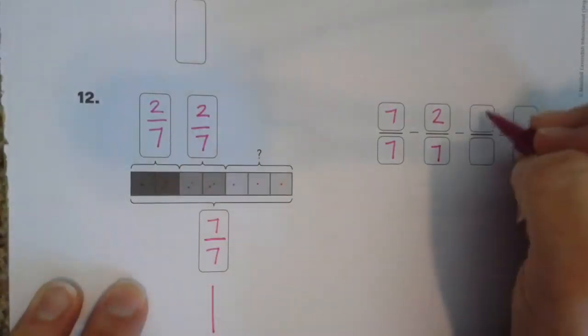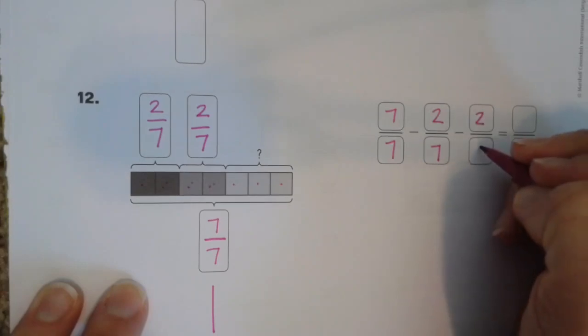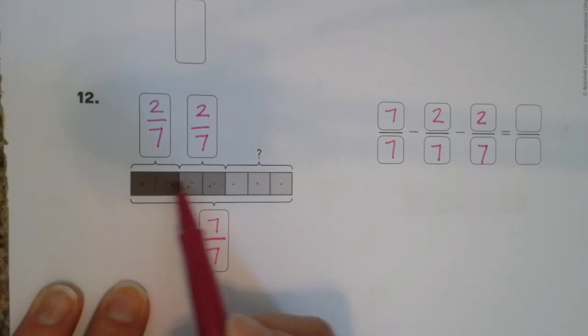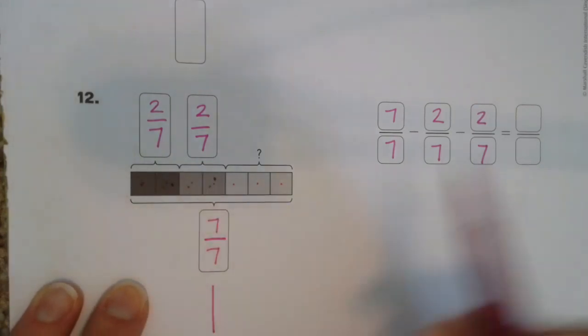Can I do it? You can watch me. So, we started with 7 sevenths. We took 2 sevenths away. Then we took these 2 sevenths away.